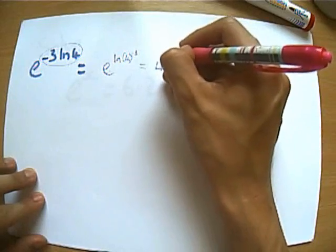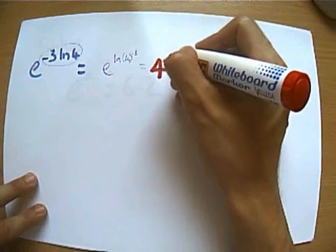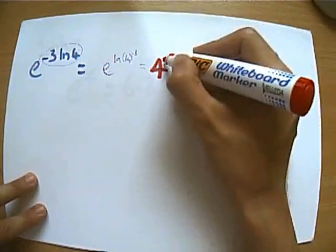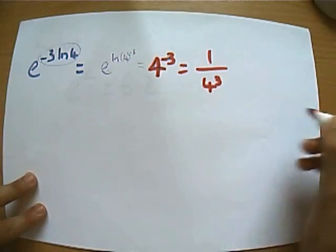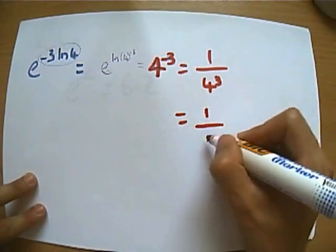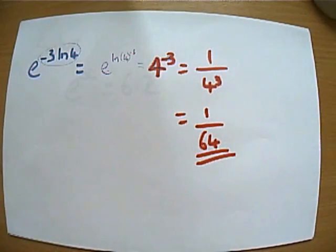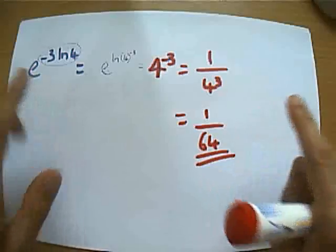And these bits will cancel out, and so you're left with 4 to the negative 3. Let's write that in my big pen so you can see that. 4 to the negative 3, which of course as soon as you see a negative power, you write as 1 over whatever you're left with.